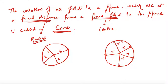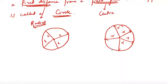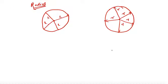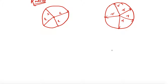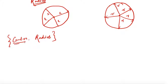After knowing what a circle is, let's move on to a few basic terminologies related to circles. A circle always has a center and a radius — you can never define a circle without its center and radius. These are the two basic building blocks of a circle.